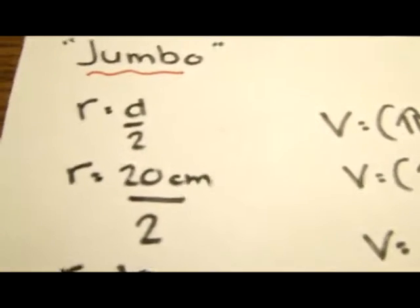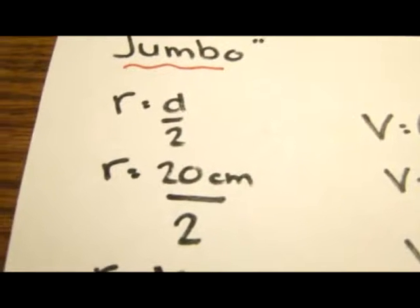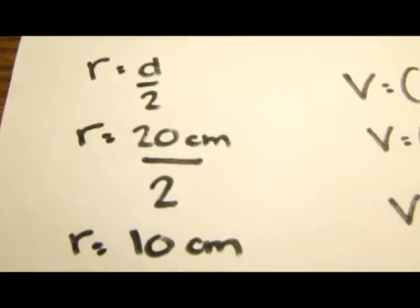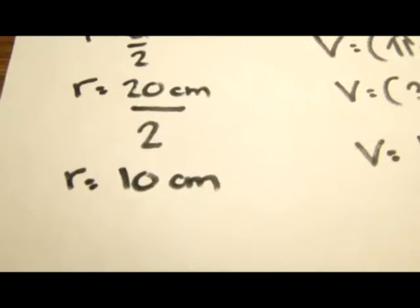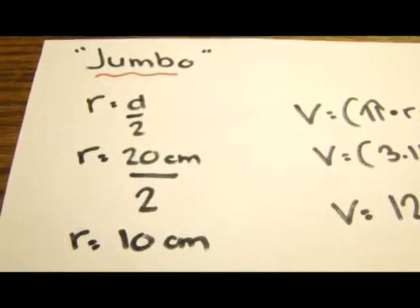For this question, I divided the diameter by 2 to get the radius, so 20 centimeters divided by 2, which is 10. So the radius of the jumbo container is 10 centimeters.